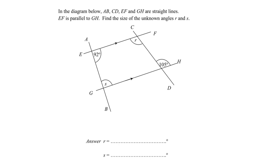Hello everyone, welcome to this question where we are given that ABCD and EF and GH are straight lines, and EF is parallel to GH. Find the size of the unknown angles at R and S. Since we have parallel lines, R and the 105 degrees are actually alternate angles, and therefore R is 105 degrees.